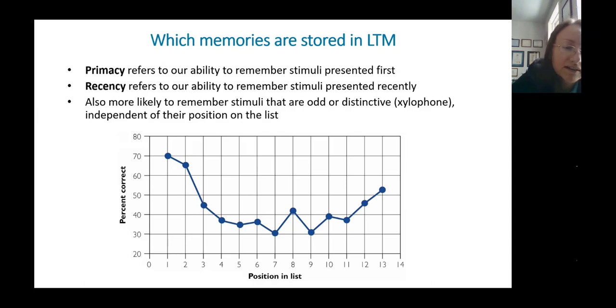We are more likely to have long-term storage of stimuli that are presented first in a list. That's called the primacy effect. So if you go to a networking event and you're meeting all kinds of people, you're more likely to remember the first people you met. And then also, you're more likely to remember the last people you met than the people you met in the middle. That's the recency effect.